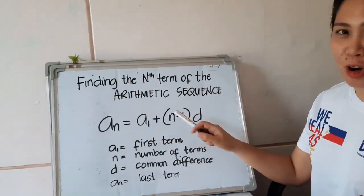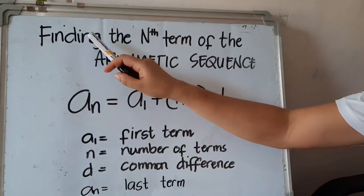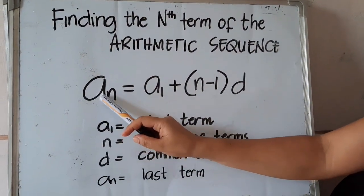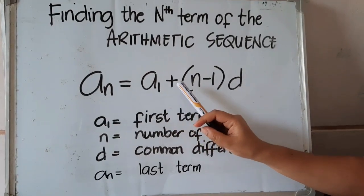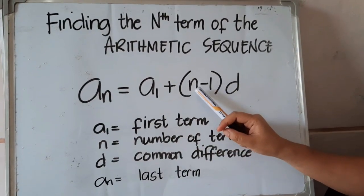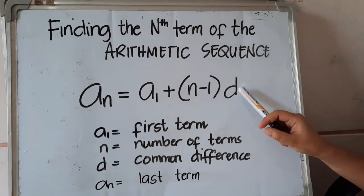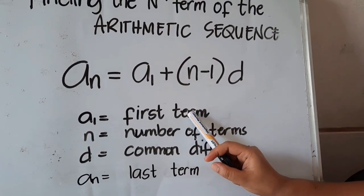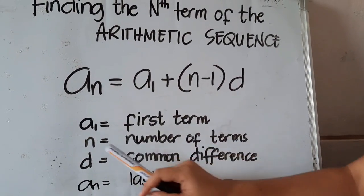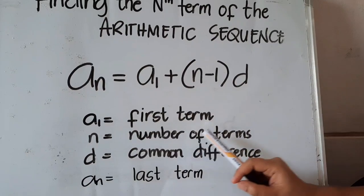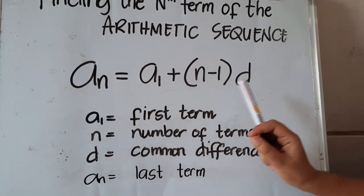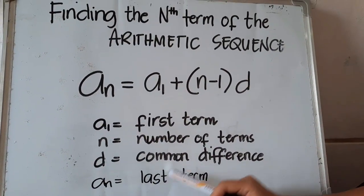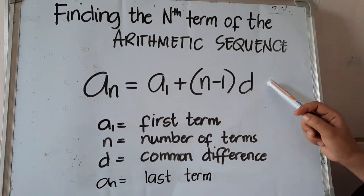In solving that kind of problem, we will be using this formula for finding the nth term of an arithmetic sequence: a_n = a_1 + (n - 1) × d. Here, a_1 refers to the first term, n stands for the number of terms, d is the common difference, and a_n is the last term.